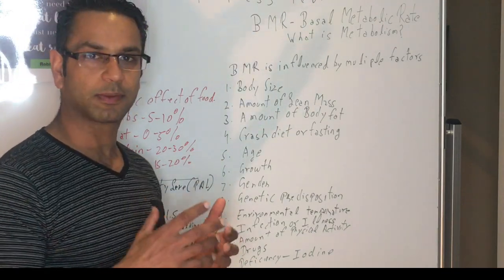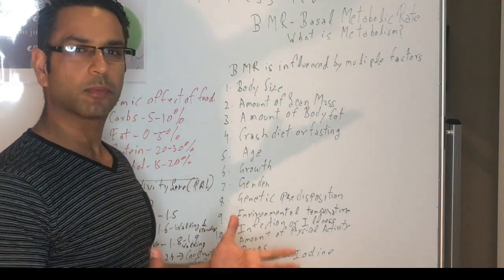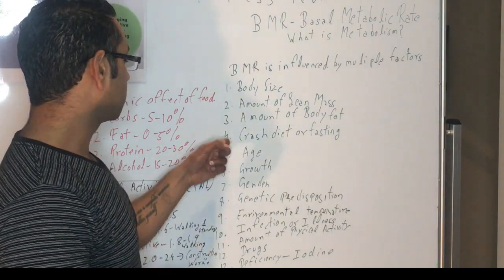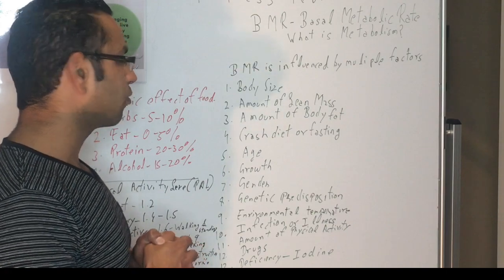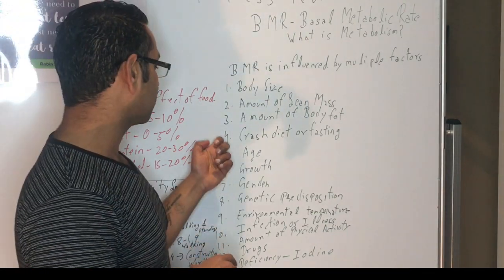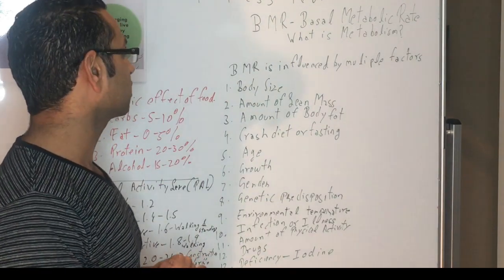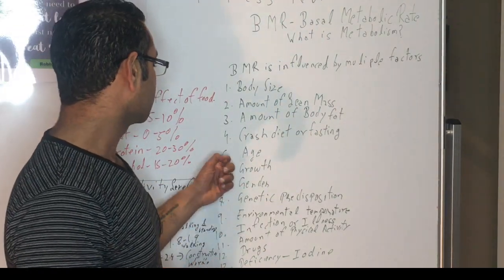The third one is the amount of body fat. So if you carry more body fat, then the chances are you might have less BMR. The fourth one is crash type of fasting. So if you have done any crash dieting or fasting, actually it decreases your basal metabolic rate.